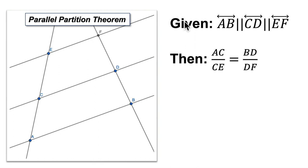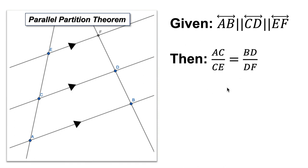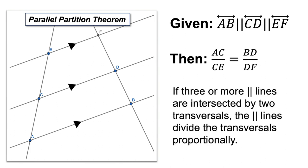If you have three or more parallel lines and they're cut by transversals, the transversals are divided proportionally. For example, this transversal is cut into AC and CE, and this transversal is cut into BD and DF, and the ratio of BD to DF equals the ratio of AC to CE. Isn't that really cool? The parallel lines divide these two transversals in a proportional way.